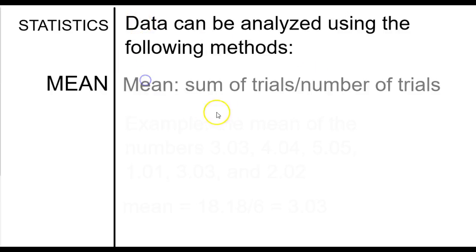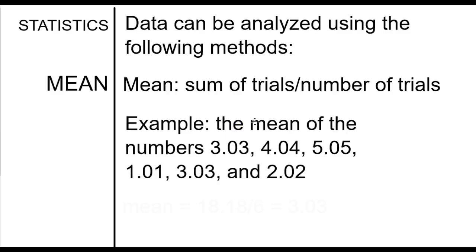The first is the mean, which is the sum of your trials over the number of your trials. This gives you an example here. To find the mean of these numbers, you would add them up. You get 18.18 divided by 6, which gives you 3.03. This is the one that we probably use the most often in class. We take the mean of data sets all the time, so this one is pretty common.